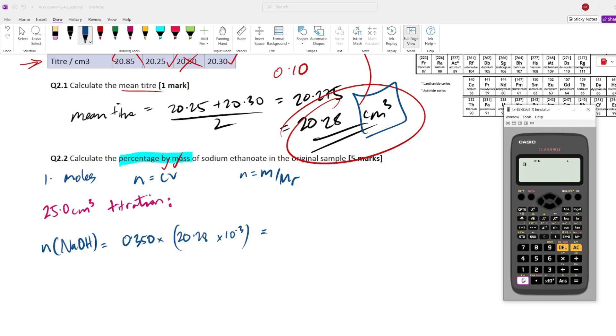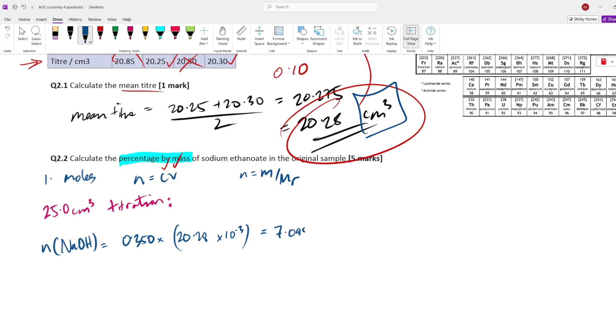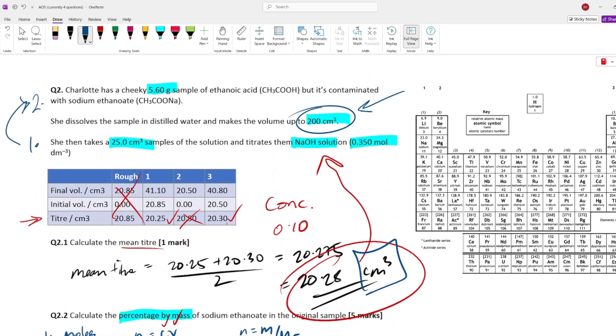So, we got 0.5 multiplied by, bracket that bad boy up, 20.28 times 10 to the minus 3, close bracket. And that gives us 0.01014 times, and that is moles. Done. That is the moles of the sodium hydroxide.